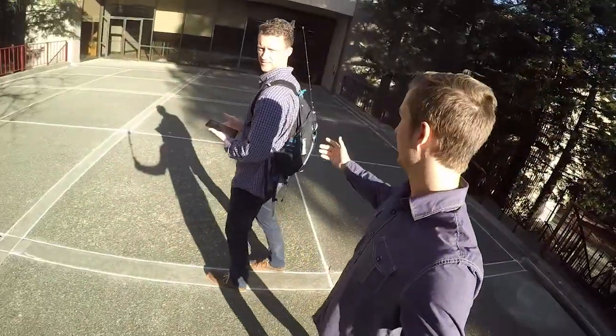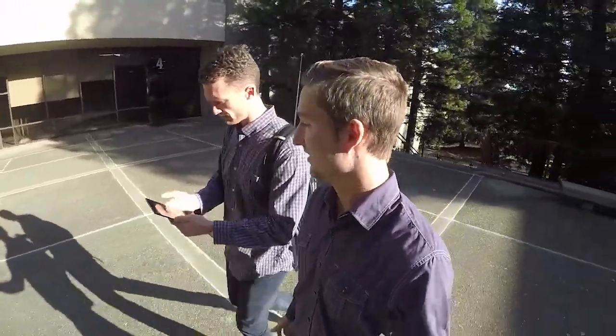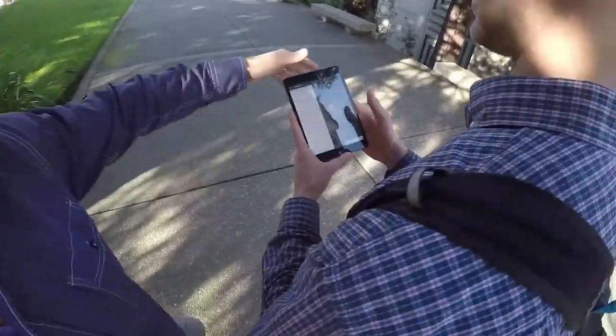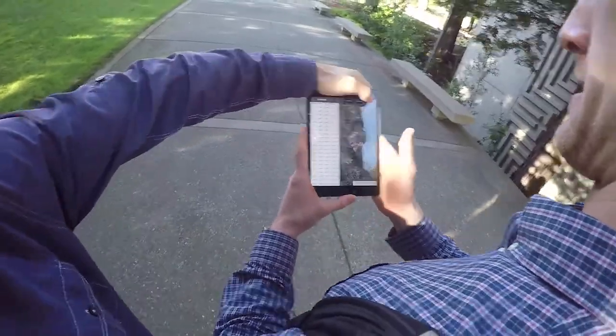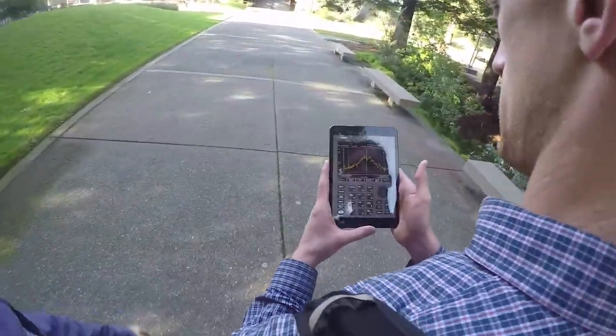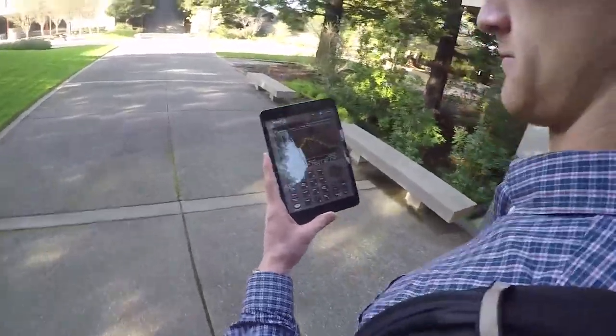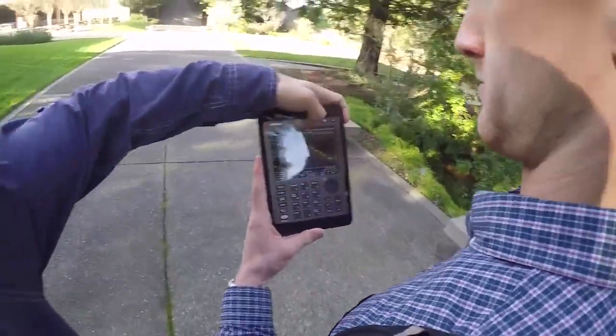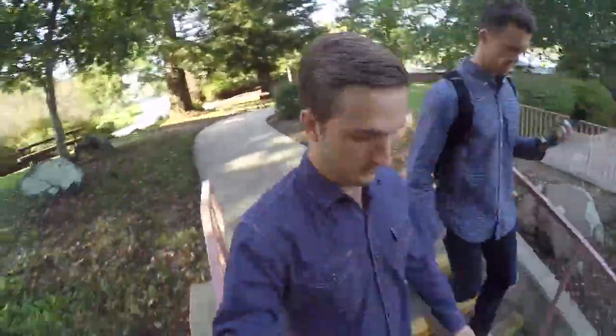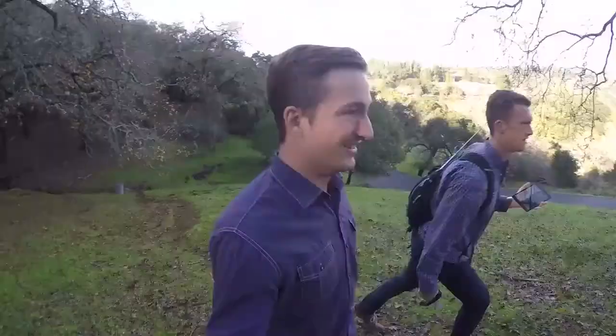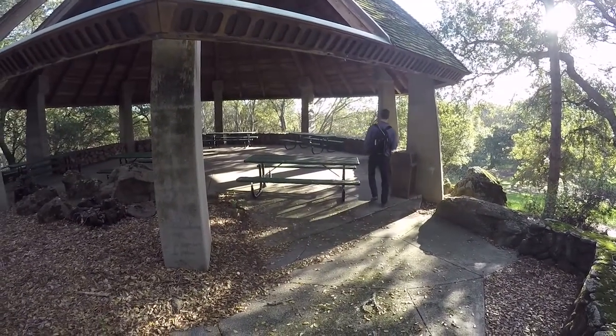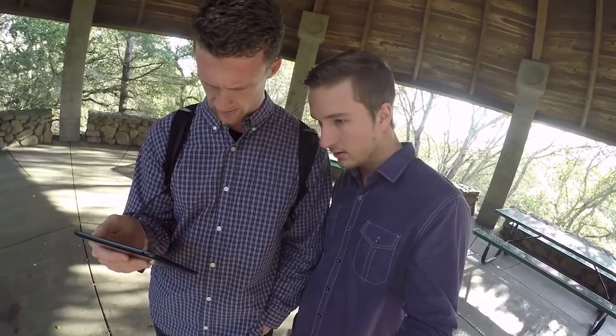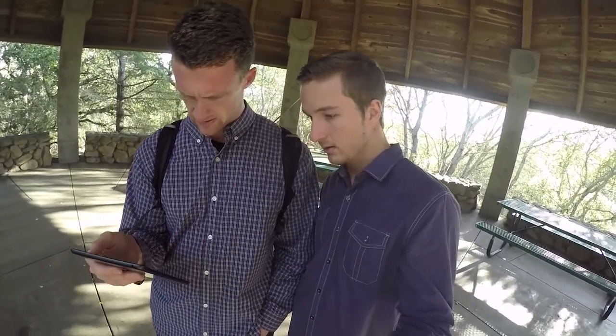So the FieldFox is actually in his backpack so he's doing everything remotely. Let's check this out. Set map off. We're seeing the FieldFox right there as we walk. Let's go back to map. A solid minus 40. That's pretty good power.